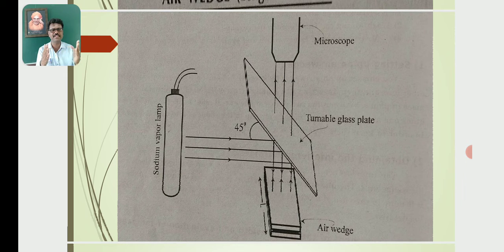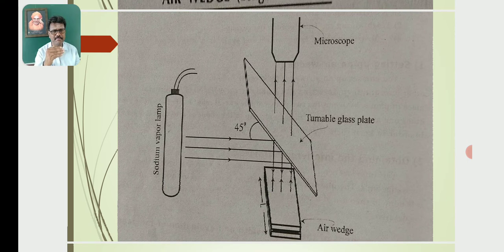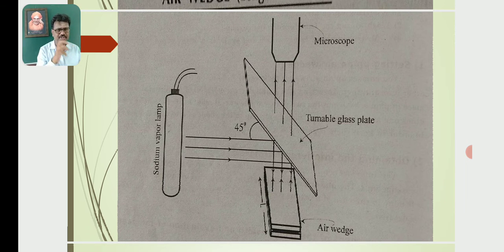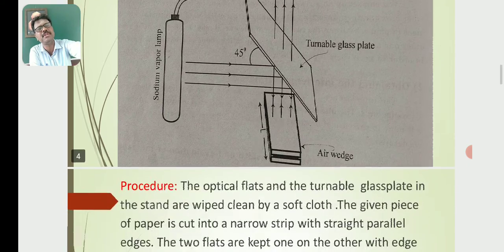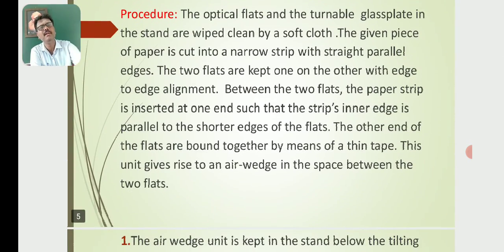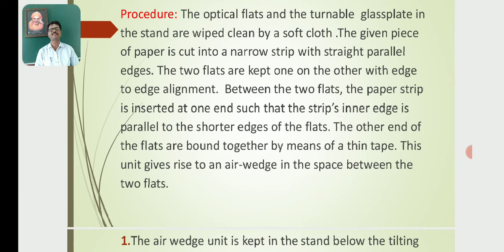The interference pattern consists of alternating bright and dark fringes. This interference pattern can be viewed with the help of a travelling microscope. This is the interference pattern obtained in the case of an air wedge experiment.